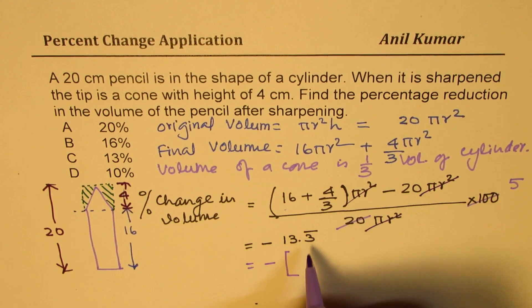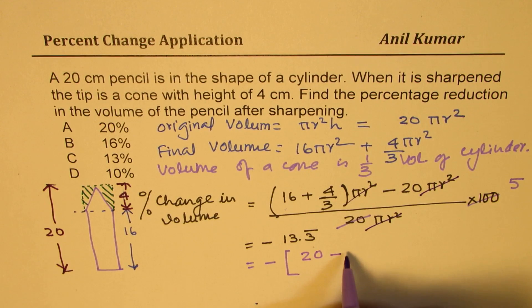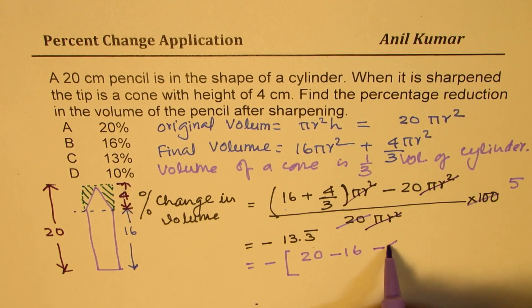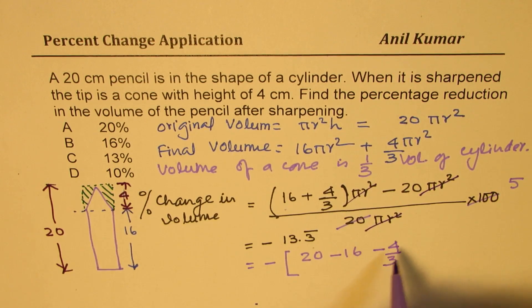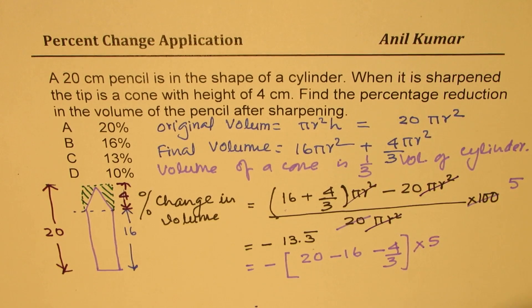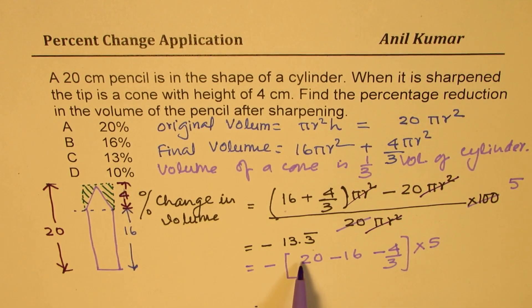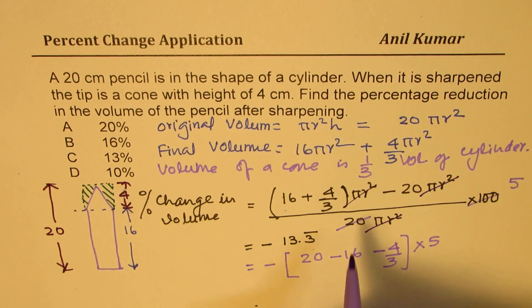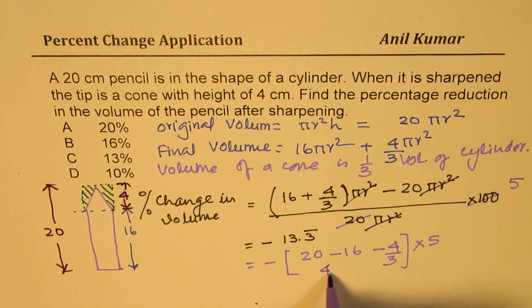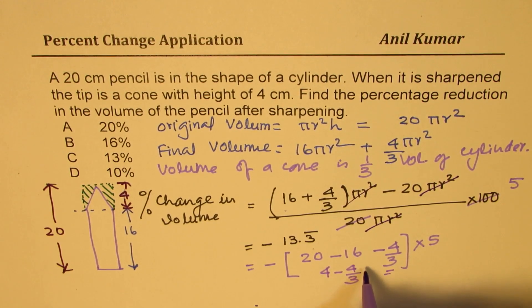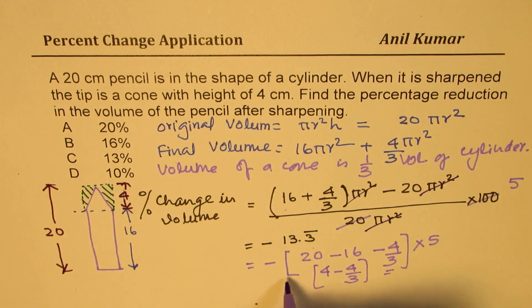So you can do a very easy calculation here. Think about it like this. You know this is negative because this number is bigger. So you have to do 20 minus 16, and then you have to take away 4/3, and then you have to multiply by 5. This is 4, so this is 4. You could take this as 4 minus 4/3. Since common denominator, you could times 5.